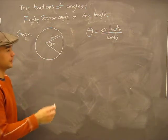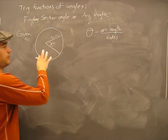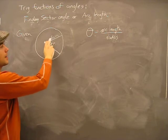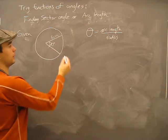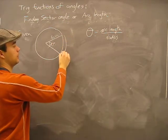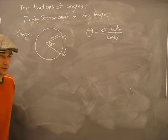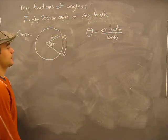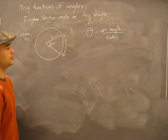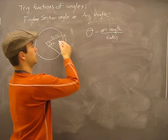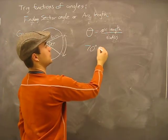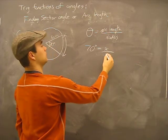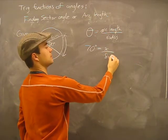Watch for the tricky part. Given this problem, we have our angular measure and a radius. We want to know what our arc length is. So we have 70 degrees, arc length unknown, and radius of 8 centimeters.